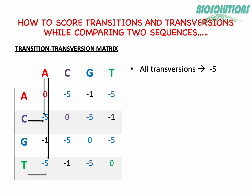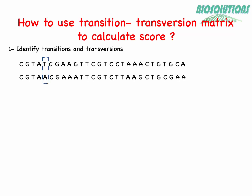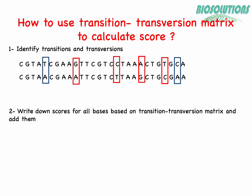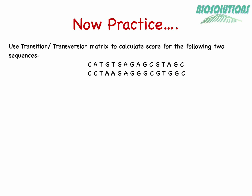Let's learn how to use this matrix to calculate transition transversion scores for two example DNA sequences. We will first identify and locate the transition and transversion events, then use the values from the matrix and write them down below the bases, and add them to get a score. Try practicing this simple question and match your answer with mine. Now you are ready to use the transition transversion matrix.